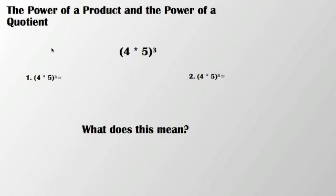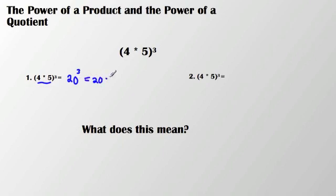Today we're going to talk about the power of a product and the power of a quotient. Let's start with this first example. I have 4 times 5 to the 3rd. Now I can solve this two different ways. I can multiply 4 times 5 and that gets me 20. Then I have 20 to the 3rd, which is going to get me 20 times 20 times 20, and that is going to get me 8,000.